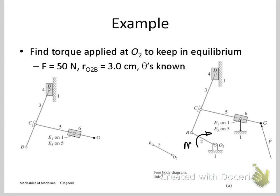Let's take a look at an example of a graphical approach to solving a statics problem on a mechanism. We have a mechanism shown here in the picture. There's a force being applied at G in the direction shown. Its magnitude is given as 50 newtons.